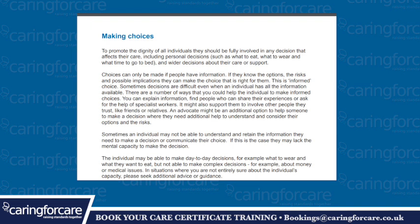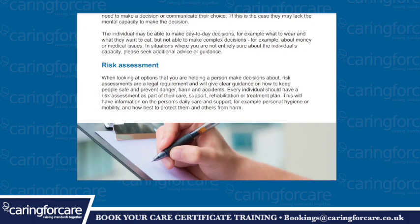You can explain information, find people who can share their experiences, or ask for the help of a specialised worker. It might also support them to involve other people they trust, like friends or relatives. An advocate might be an additional option to help someone make a decision where they need additional help to understand and consider their options and risks. Sometimes an individual may not be able to understand and retain the information they need to make a decision or communicate their choice. If this is the case, they may lack the mental capacity to make the decision. The individual may be able to make day-to-day decisions — for example, what to wear — but not more complex decisions — for example, about money or medical issues. In situations where you are not entirely sure about the individual's capacity, please seek additional information, advice or guidance.